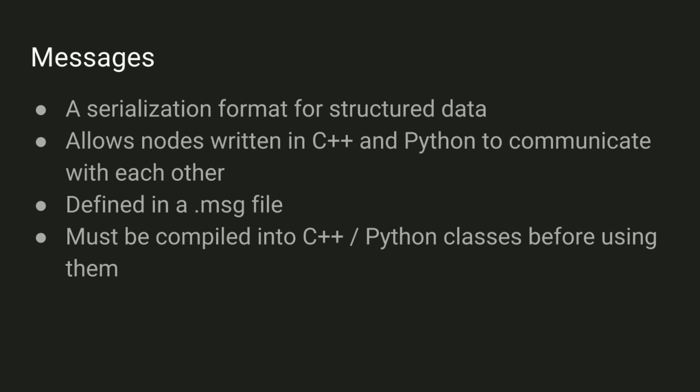A message is basically a format that allows code written in C++ and Python to talk to each other. It's a common format that's sent over these topics so that nodes can communicate. What happens is that you create your message in a dot message file using a special format. And then when you compile your code it will actually compile this message file into C++ and Python classes that you can work with. It will basically handle all the serialization and deserialization of the data for you.